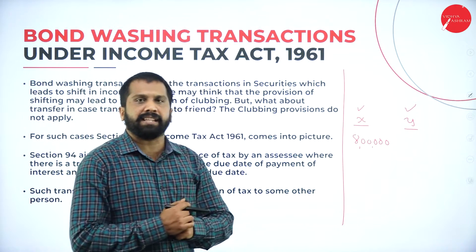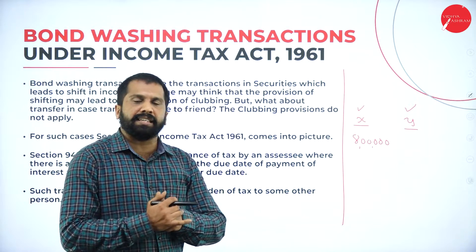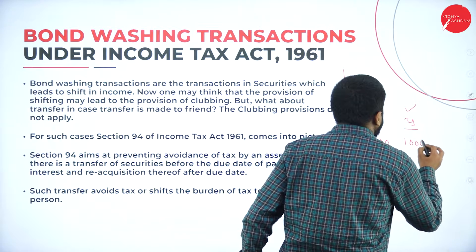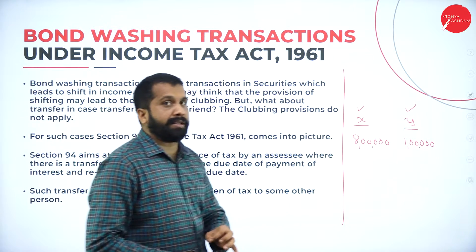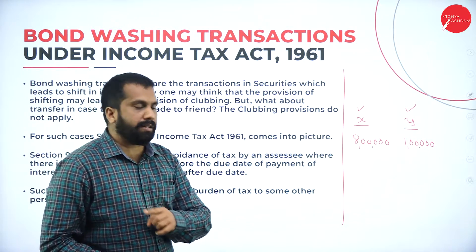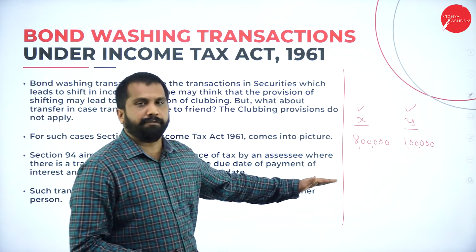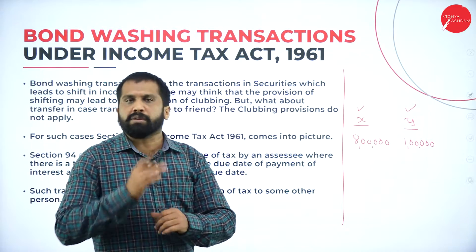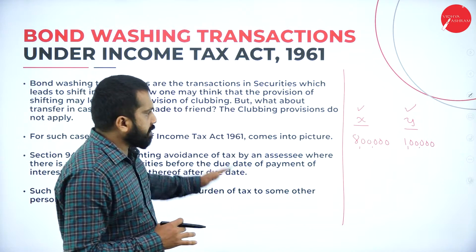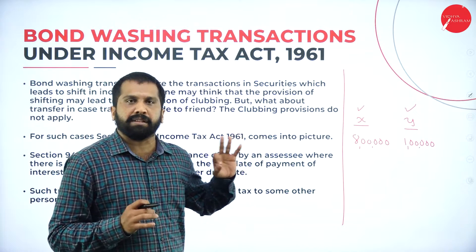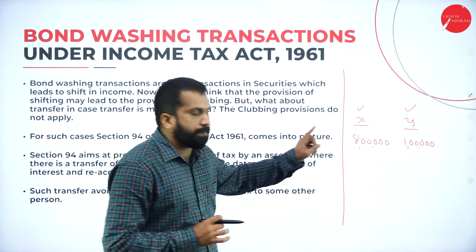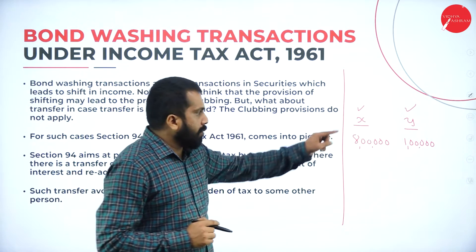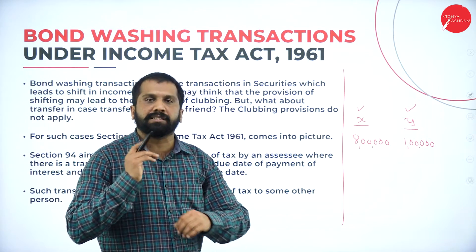What is your friend's salary? Bad luck — he did not study well. He got 1 lakh salary per annum — I am talking about per year, not per month. Whatever example I am giving now, that much only is your Bond Washing System. No need to learn definitions. Just remember this example. Your salary is 8 lakh per annum, your friend's salary is 1 lakh.